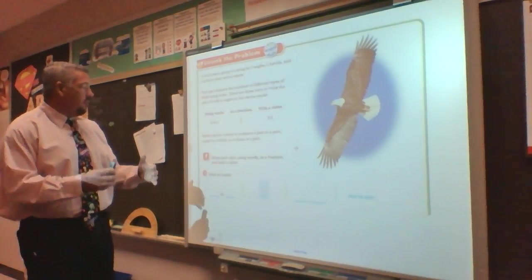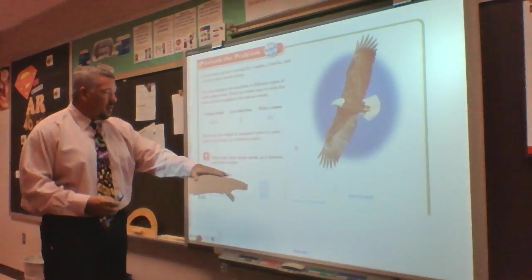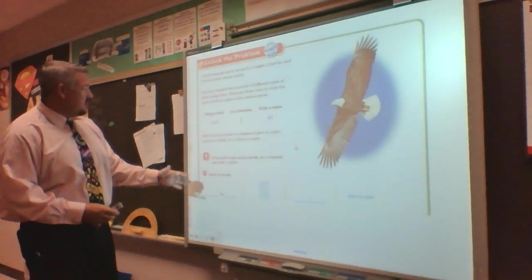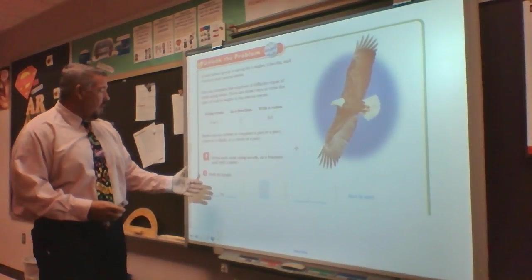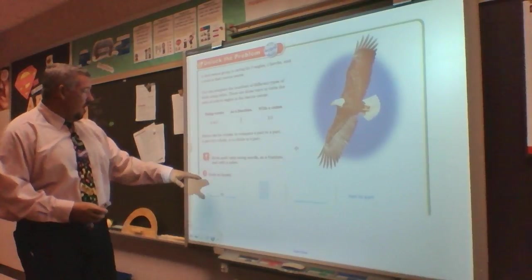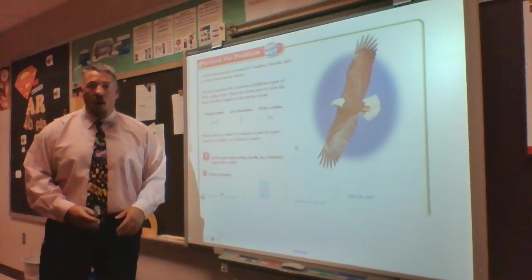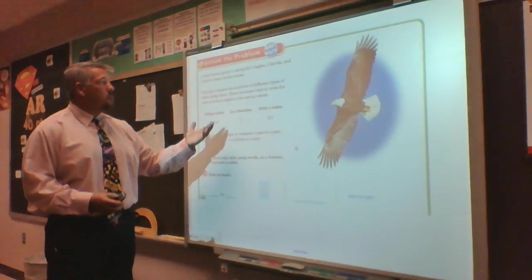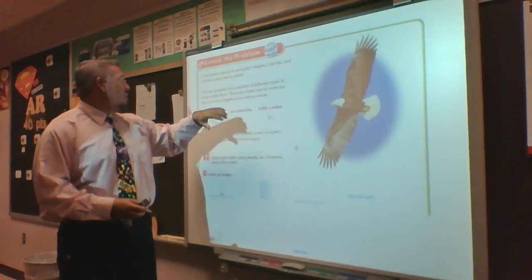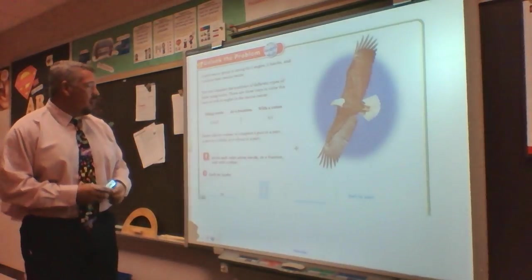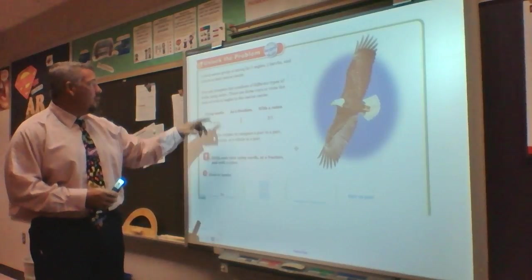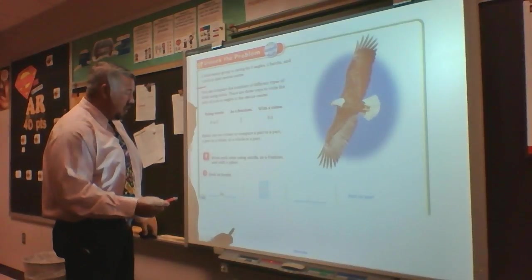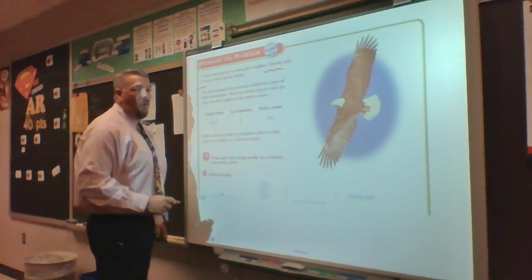So we know we're comparing different things. Now, we're going to practice writing our ratios. It says to write each ratio using words, as a fraction, and with a colon. So, owls to hawks — a bird rescue group is caring for 3 eagles, 2 hawks, and 5 owls. So this says owls to hawks: how many owls do I have? I have 5 owls. And how many hawks do I have? I have 2 hawks.